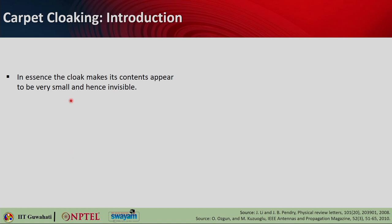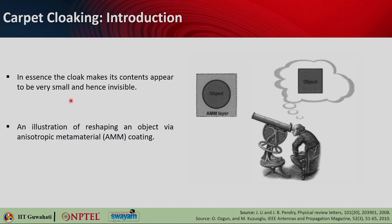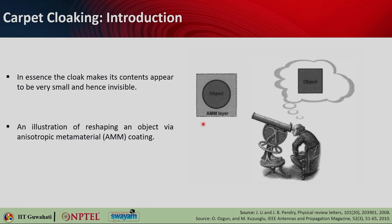In essence, the cloak makes its contents appear to be very small and hence negligible. You can think of an object put inside a square-shaped anisotropic metamaterial (AMM) target layer — this is another way of hiding an object by reshaping it. When you look at this object, it appears to be square-shaped. If you are looking for a circular object but it is hidden inside a square-shaped layer, the detection system will say this is not the object I am looking for. This is a form of invisibility — reshaping the scattering cross section, or radar cross section, of the object.